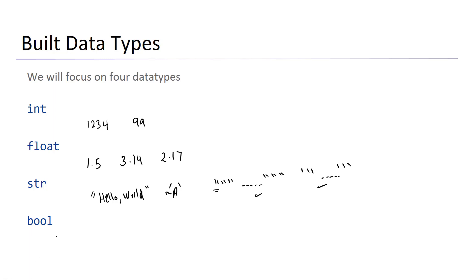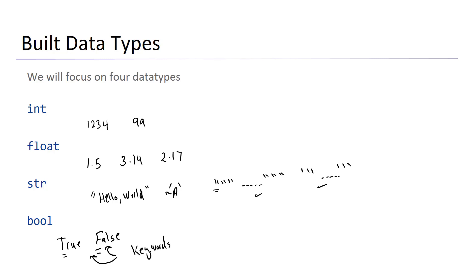Booleans represent truth information. For the bool data type, there are two allowable values: the value True with a capital T, and the value False with a capital F. Both of these are considered Python keywords, so remember these cannot be used as variable names.